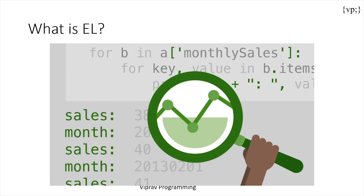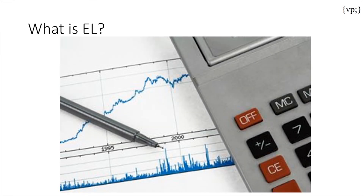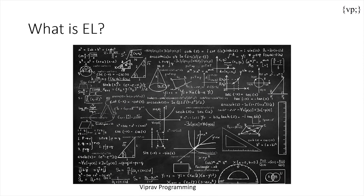EL is a dynamic way to access data from JavaBeans components — for reading data, for writing data, and to perform arithmetic, boolean, and string operations.